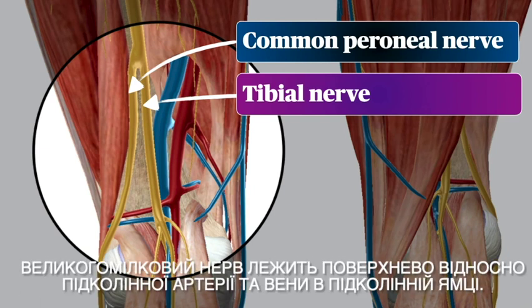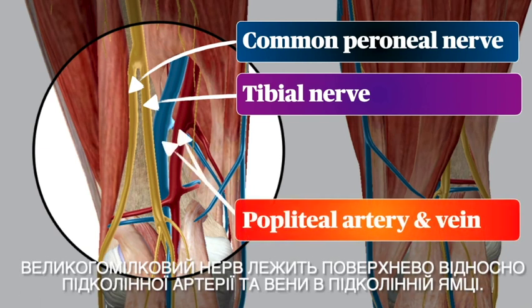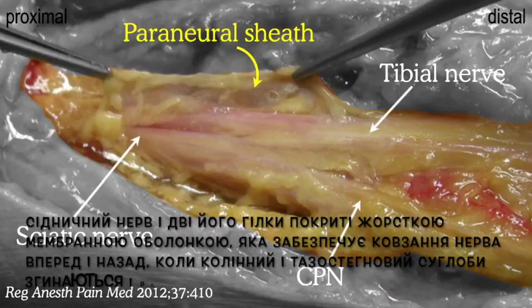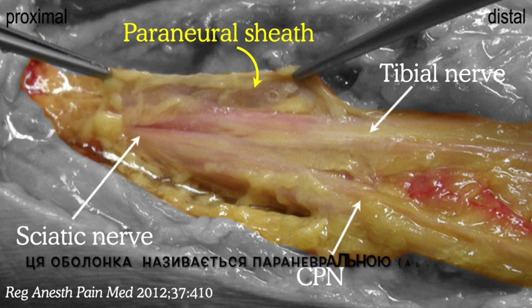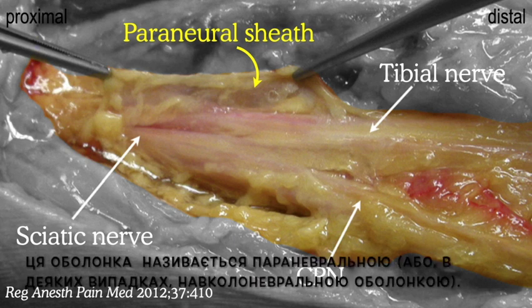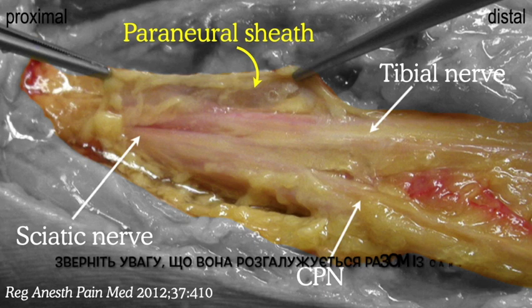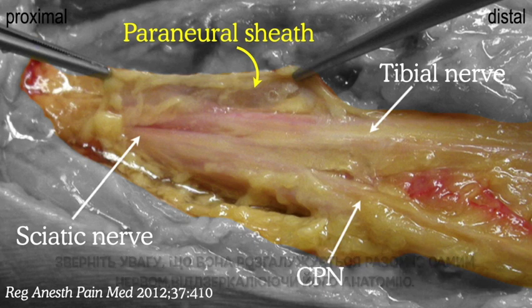The tibial nerve lies just superficial to the popliteal artery and vein in the fossa. The sciatic nerve and its two branches are covered by a tough membranous sheath that provides a mechanism for the nerve to glide back and forth as the knee and hip joints flex and extend. This has been called the perineural sheath, or in some circles the circumneural sheath, and it branches along with the nerve itself to mirror the anatomy.